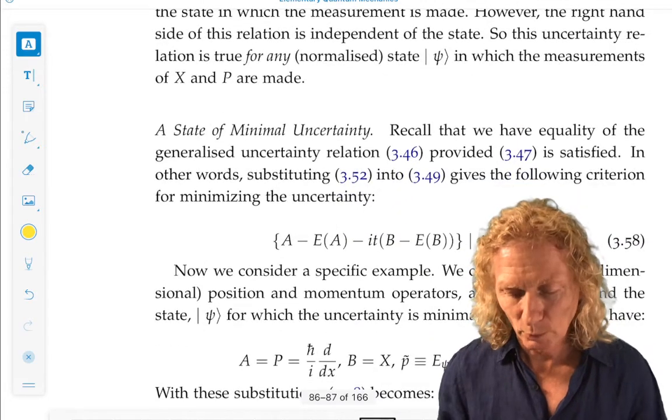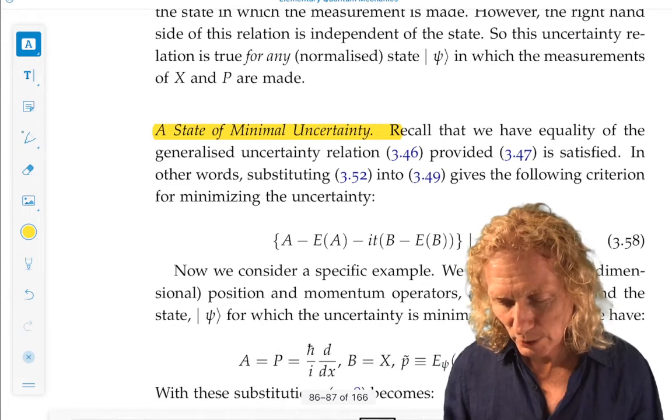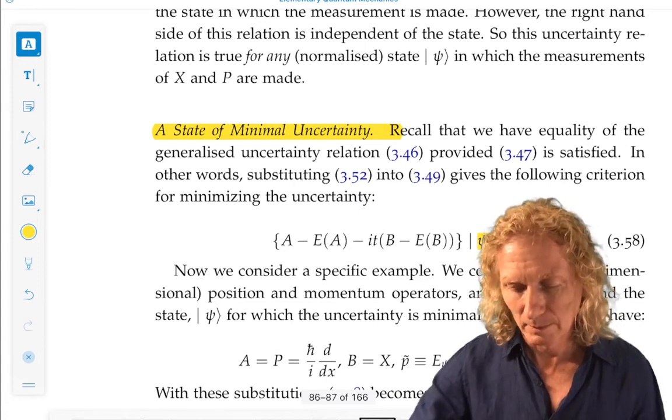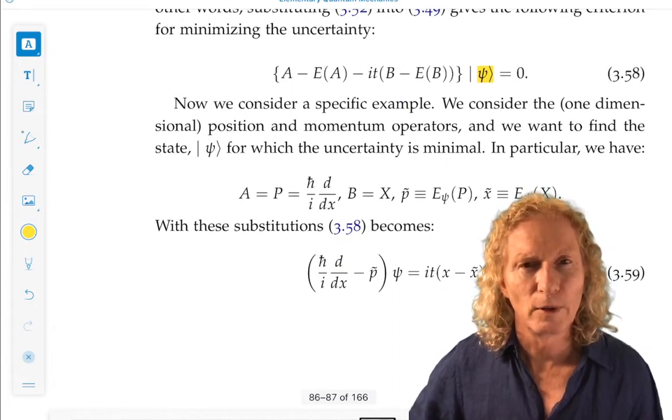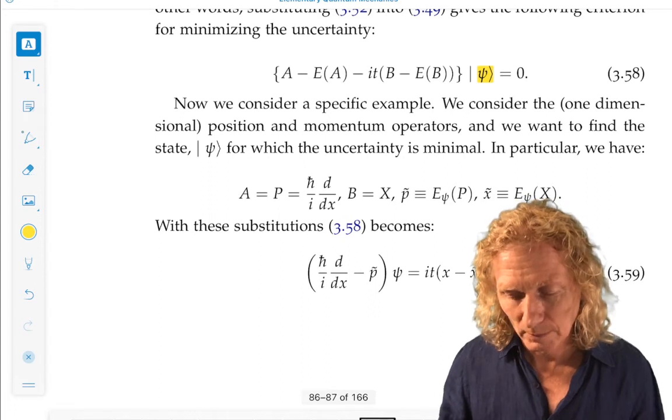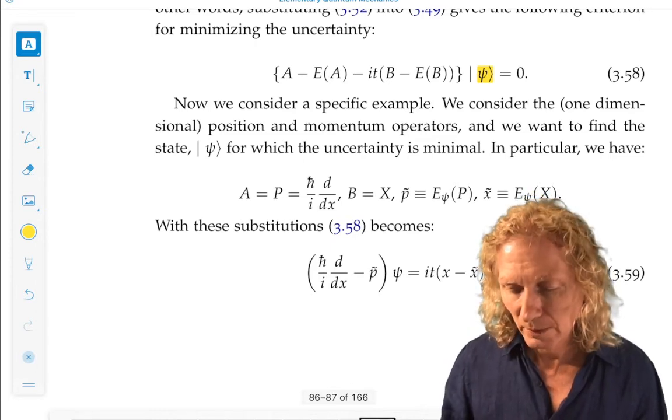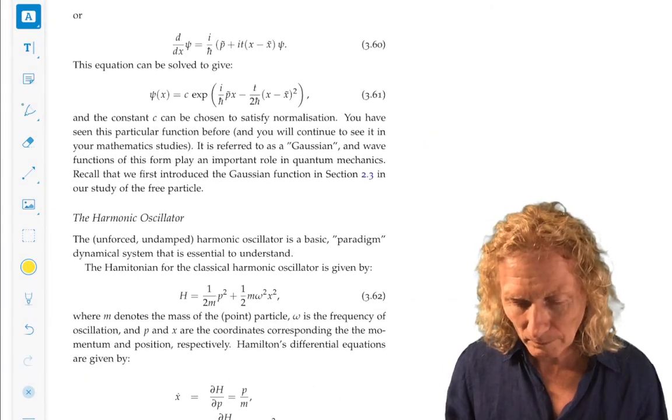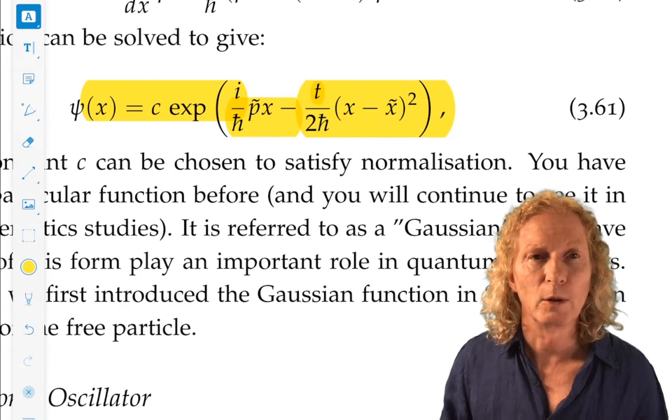Now, state of minimal uncertainty. I just want to mention this. We want to find a psi which minimizes the uncertainty. What do you think that psi is? It turns out it's the Gaussian function. The Gaussian wave function that we met when we were looking at the free particle. Wave packets associated with the free particle. Now, that's just a calculation. And that tells you something about the significance of Gaussians, because they're very significant in quantum mechanics. And we will see that more as we go along.